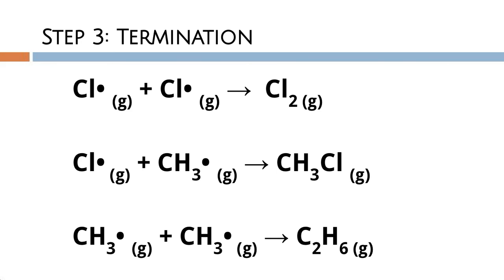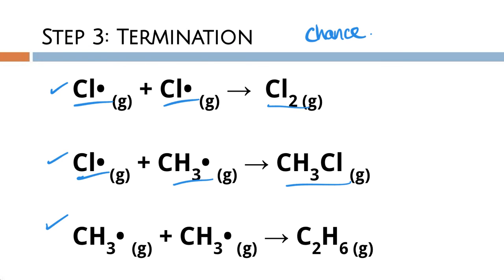Termination is step three, and it can happen through one of three possible reactions. When writing out the mechanism we include all three, but in reality only one happens to terminate the reaction — it's essentially a game of chance. Either two chlorine free radicals collide to regenerate a chlorine molecule, or a chlorine free radical collides with a methane free radical to create one of the products, or two methane free radicals collide to create ethane.